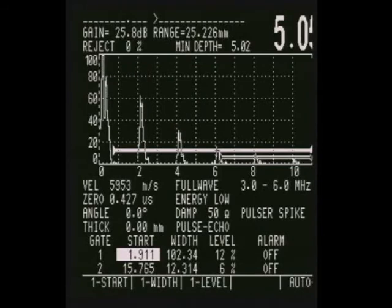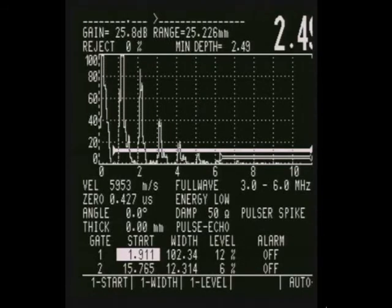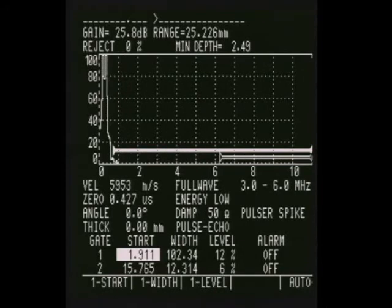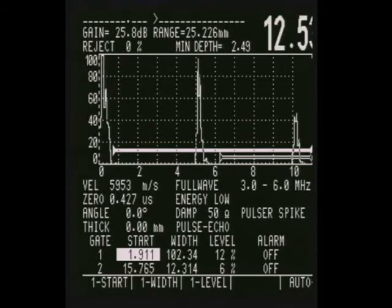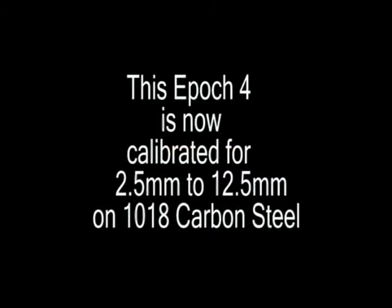Now I'm just double checking my wedge. 2.5. With a single crystal, I'm accurate all the way from 2.5mm to the top of the wedge at 12.5mm. Because we have no VPath error with a single crystal transducer. We will, however, not have proper corrosion.